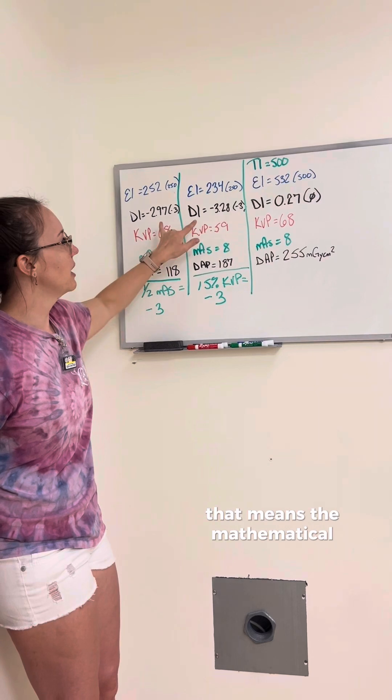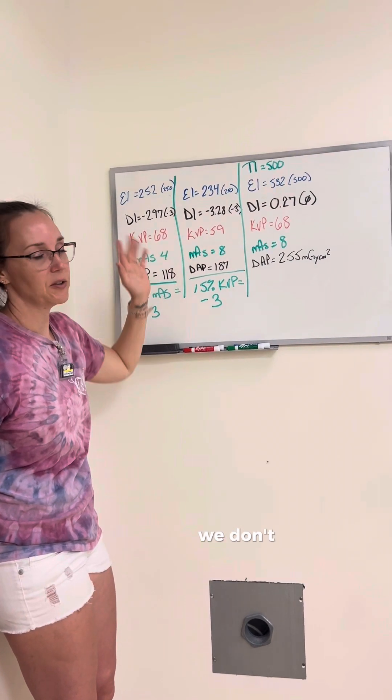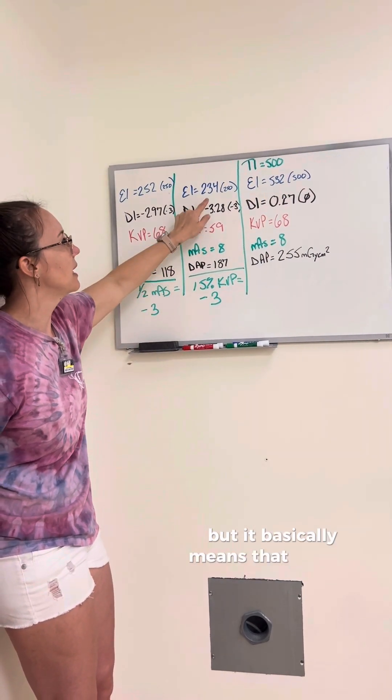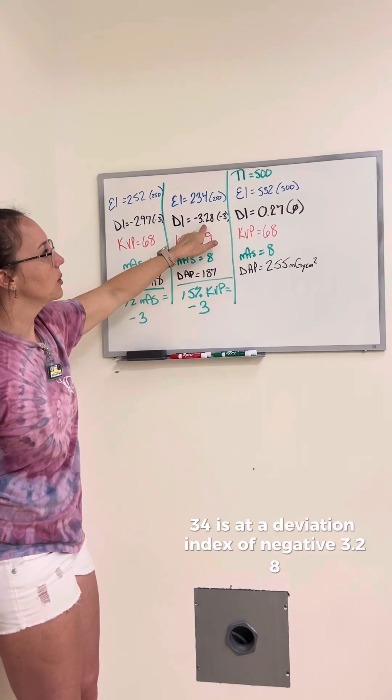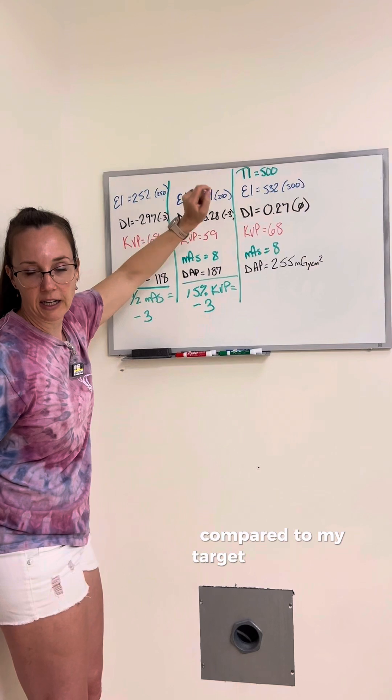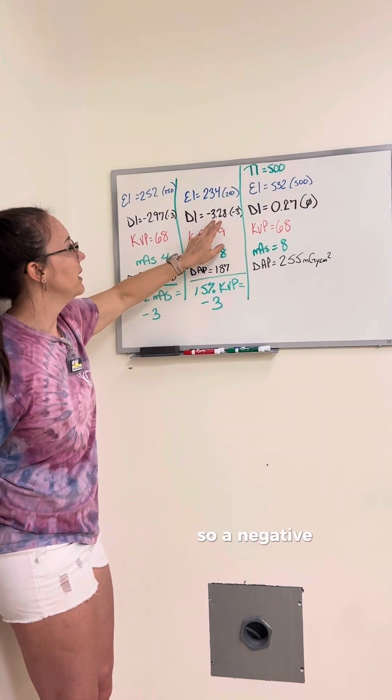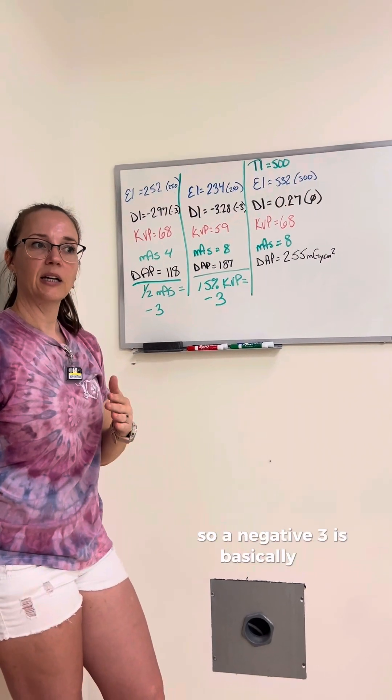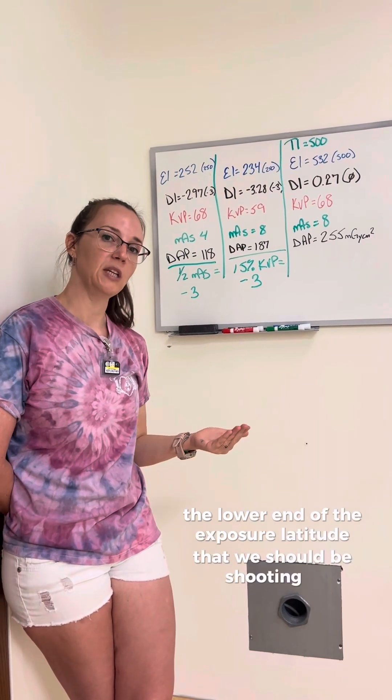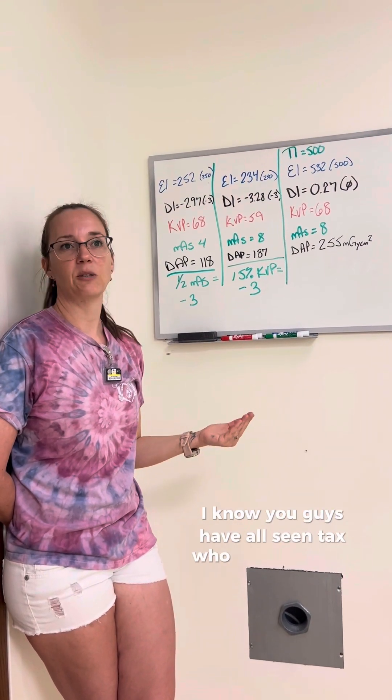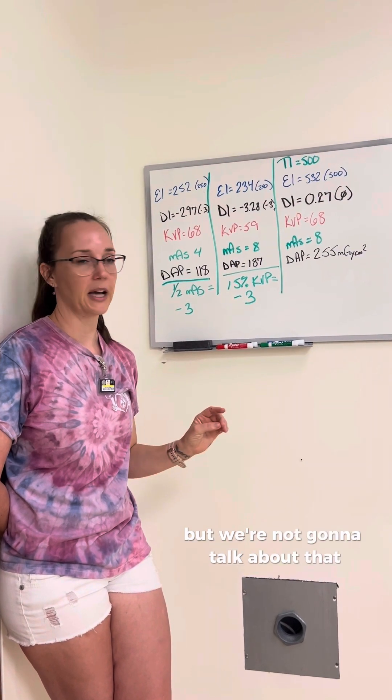That means the mathematical equation that goes into DI's, we don't need to know that, but it basically means that my 234 is at a deviation index of negative 3.28 compared to my target index of 500. So a negative 3 is basically the lower end of the exposure latitude that we should be shooting at.